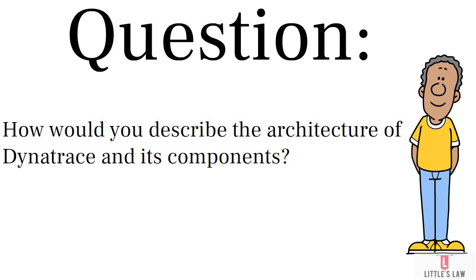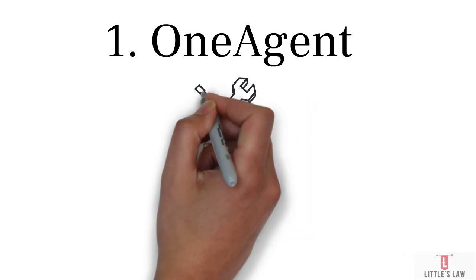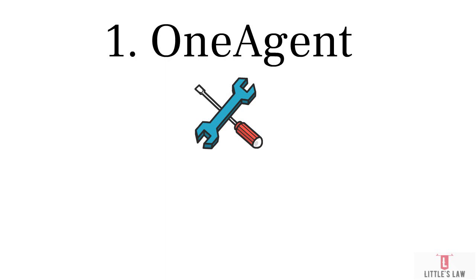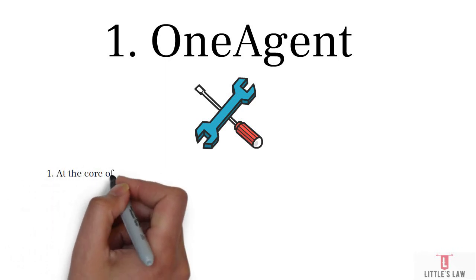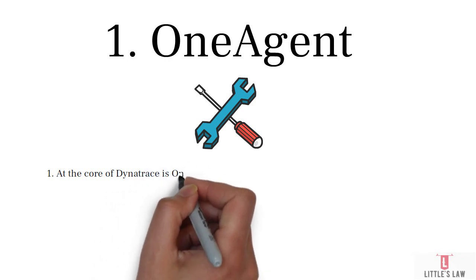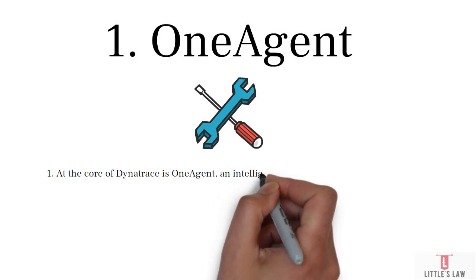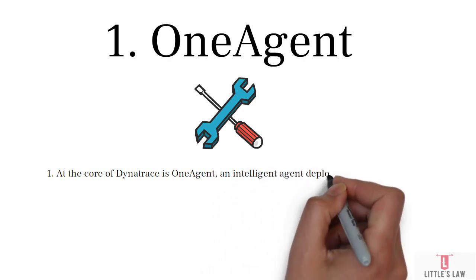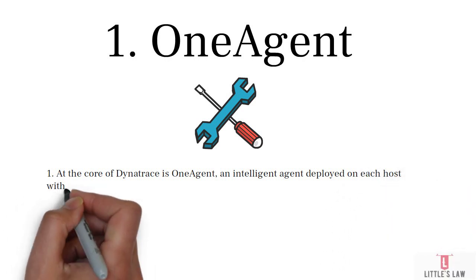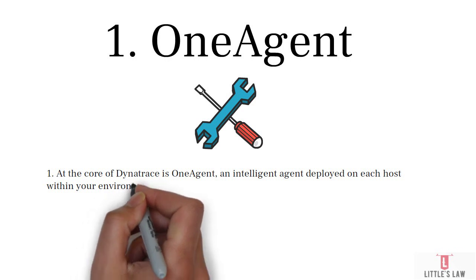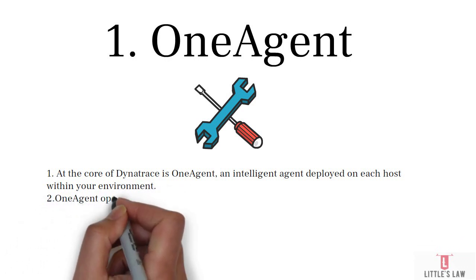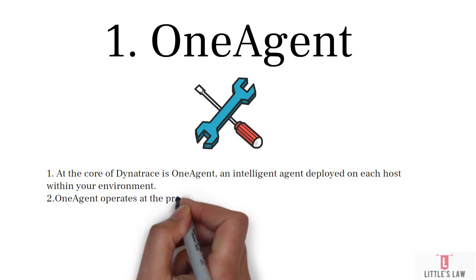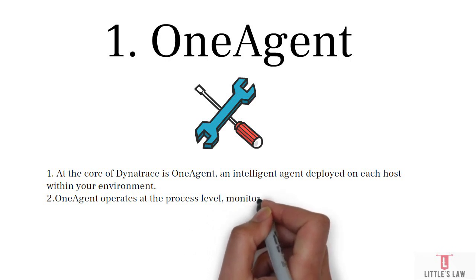The architecture of Dynatrace is built to handle the challenges of modern, dynamic, and distributed applications. So let's go to the components. The very first component is the OneAgent. The core of Dynatrace is the OneAgent — an intelligent agent deployed on each host within the environment. OneAgent operates at the process level, monitoring all software services, processes, and dependencies without requiring any manual instrumentation.